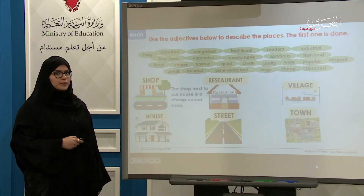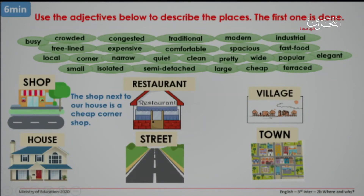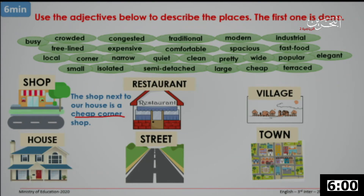Task number two: we've learned some adjectives and we need to use them to write short descriptions of places. The first one is done as an example — 'The shop next to our house is a cheap corner shop.' Now you need to use the adjectives to write descriptions of the other places. You have six minutes to do so. Make sure you focus on the adjectives, like here we have 'cheap' and 'corner shop.'